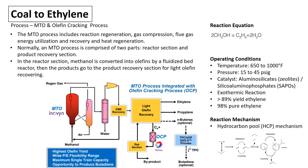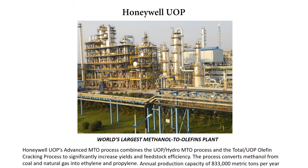The reaction mechanism involving methanol and the catalyst is the hydrocarbon pool mechanism. One of the plants that utilizes the MTO process to produce ethylene is Honeywell UOP, the world's largest methanol to olefin plant. It has an annual production capacity of 883,000 metric tons per year.